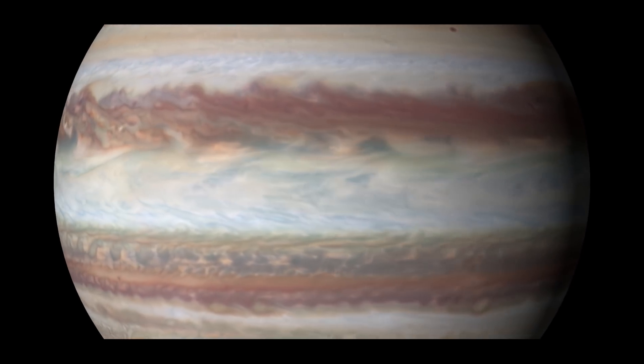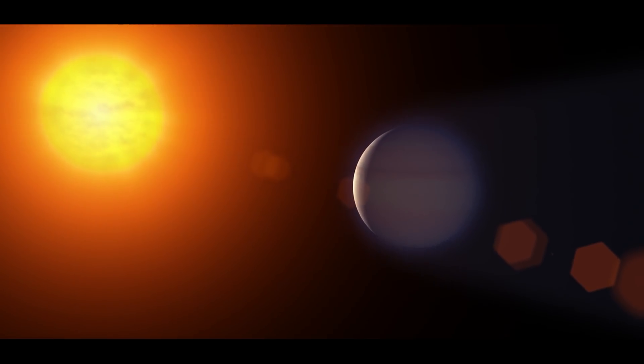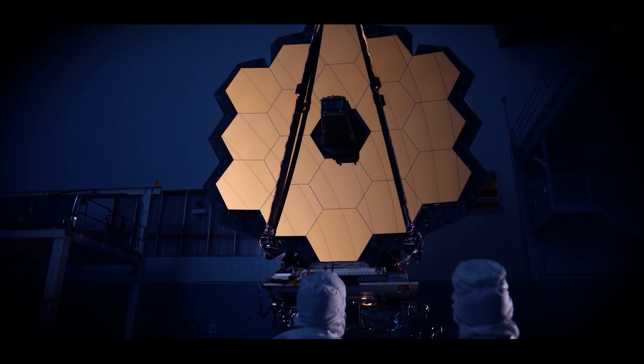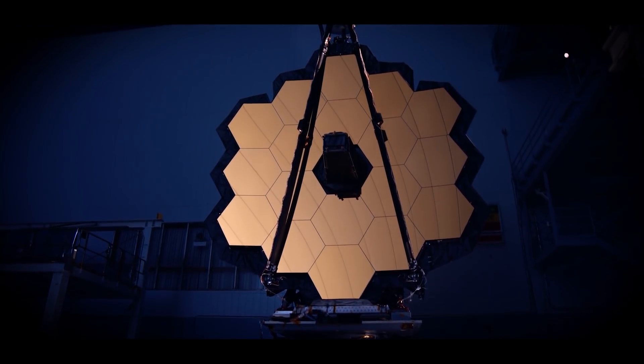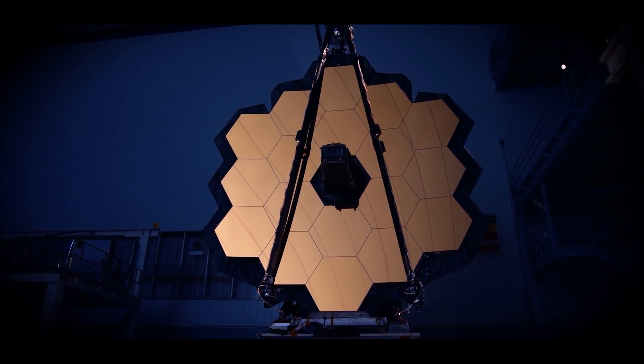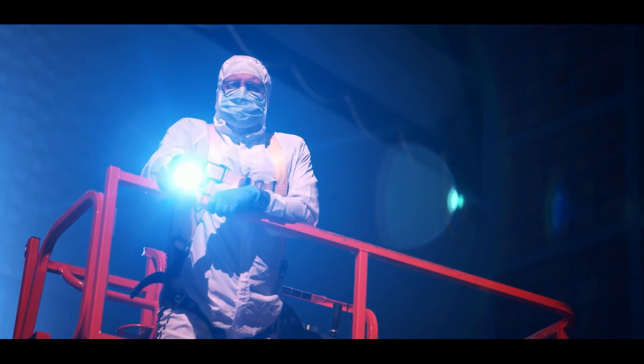It will be able to directly image planets the size of Jupiter in our neighborhood, and it can also detect even smaller planets, provided they're very young and still glowing from the formation phase. Therefore, the telescope also has coronagraphic properties to block out the light of a star.